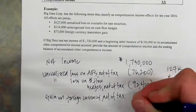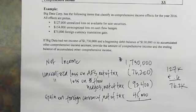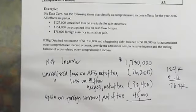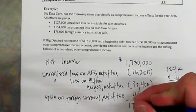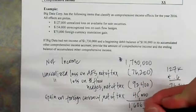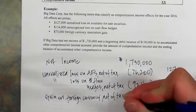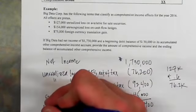Totaling these up: $1,730,000 net income, minus $76,200 unrealized loss on available-for-sale securities, minus $92,400 unrealized loss on cash flow hedges, plus the foreign translation gain net of tax — that gives comprehensive income of $1,606,400.